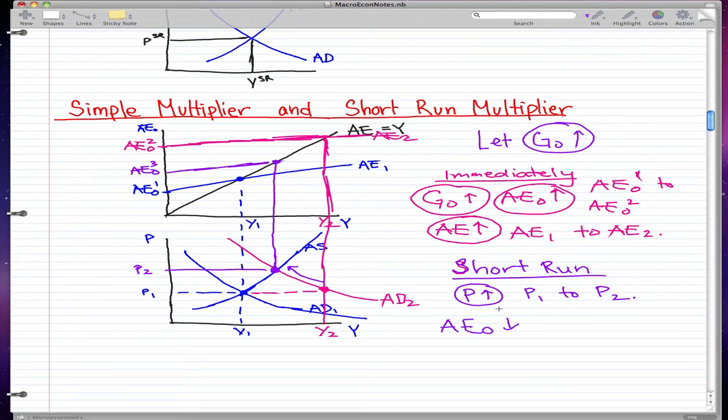That's why autonomous consumption decreases. So say if the prices of apples rose and people can't buy apples anymore, then of course they're not going to spend anything on it. That's why autonomous consumption falls, even if they need it. So let's say AE₂ drops to AE₃, AE₀3.